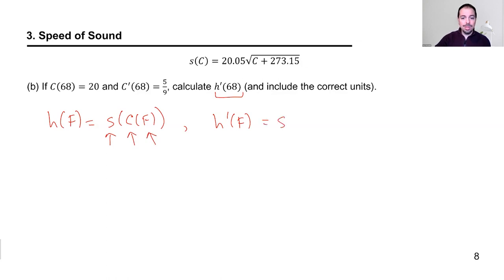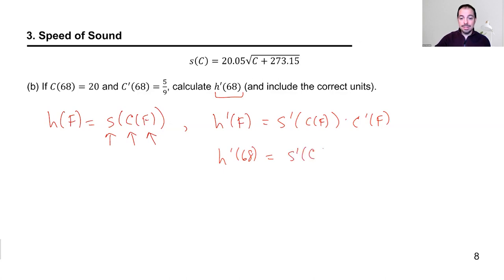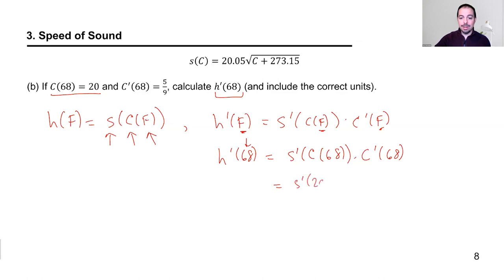The chain rule says: take the derivative of the outside function evaluated at the inside, then multiply by the derivative of the inside. So H prime of F equals S prime of C of F times C prime of F. Substituting in 68: H prime of 68 equals S prime of C of 68 times C prime of 68, which is S prime of 20 times 5/9.